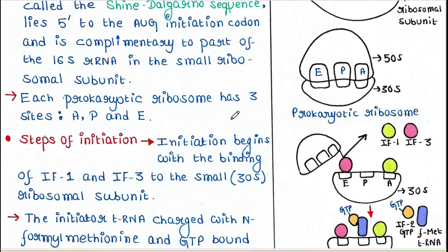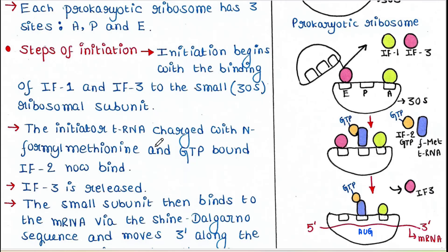Now let's talk about the steps of initiation. Two initiation factors, IF1 and IF3, come to bind the small subunit. IF1 binds the A site and IF3 binds the E site. Once they bind the small subunit, the large subunit gets displaced.